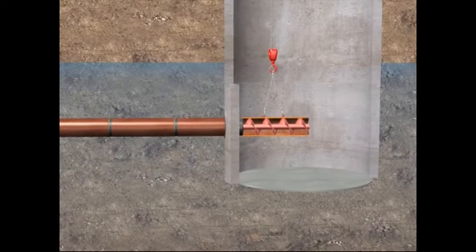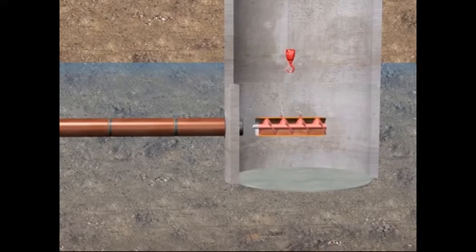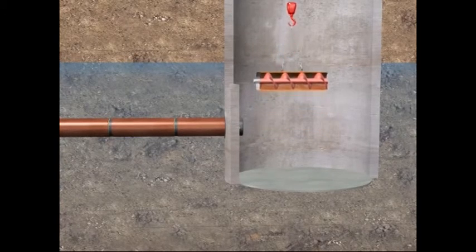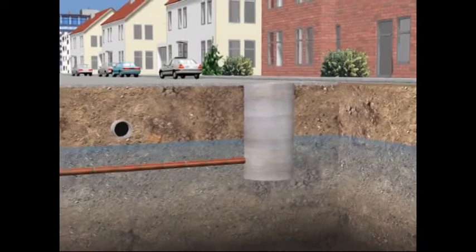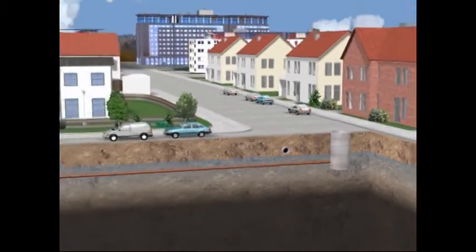When the last casing reaches the reception shaft, the jacking procedure is completed. After an inspection, the sewer can be commissioned.